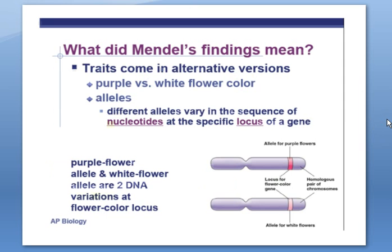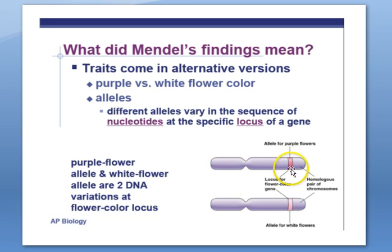Mendel's findings showed that traits come in alternative versions — for example, purple flowers or white flowers. These different versions of a trait are called alleles. They are located on the same area of the chromosome, but the DNA sequence might be slightly different. Because we're diploid, we have two sets of chromosomes, and that's true for plants as well. We have two genes for every trait, and the different versions of those genes are called alleles.